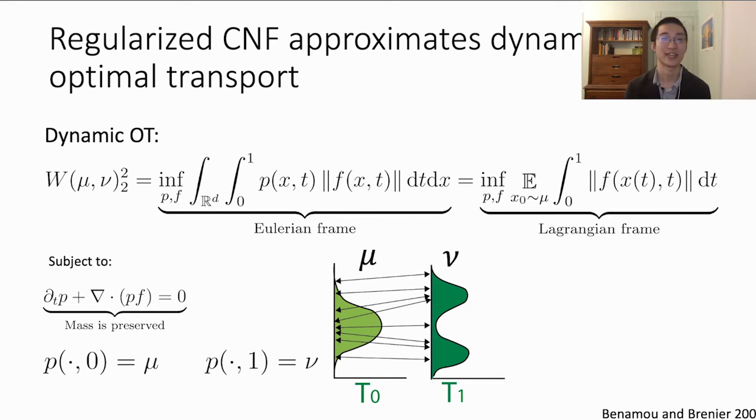However, this can also be interpreted in terms of dynamic optimal transport, which models the full path of particles over time and matches the distribution at the beginning and end time points. Then, the expected distance of a particle as it moves is equivalent to the Wasserstein distance.